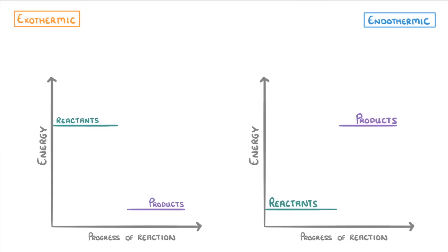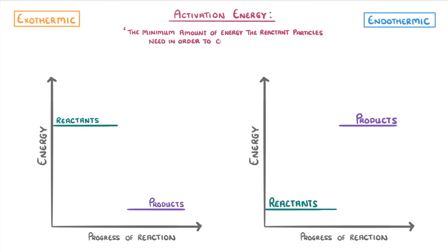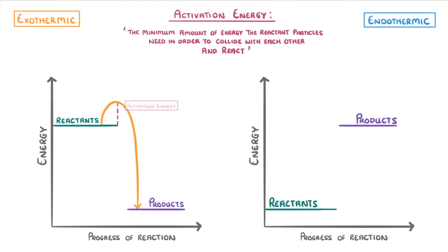So far we've covered what exothermic and endothermic reactions are and looked at the reaction profiles for each, which you might have to draw in the exams. The last thing we need to cover is activation energy, which is the minimum amount of energy the reactant particles need in order to collide with each other and react. So the greater the activation energy, the more energy that will be required to start the reaction. We can show this activation energy on our reaction profiles when we draw a curve from the reactants to the products, to show how the energy changes during the reaction. Specifically, this increase in energy from the reactants' energy level to the highest point on our curve is the activation energy.